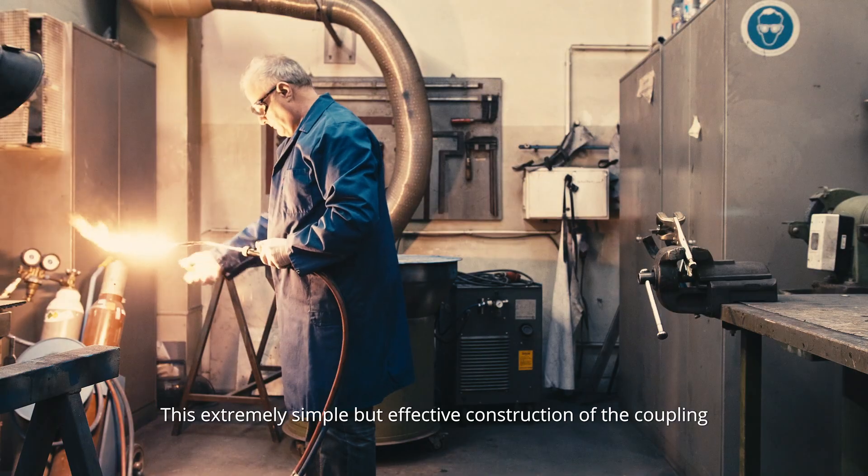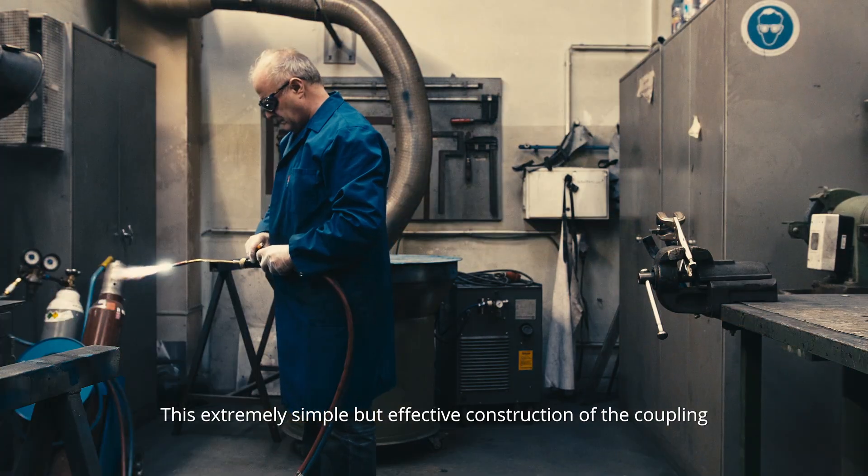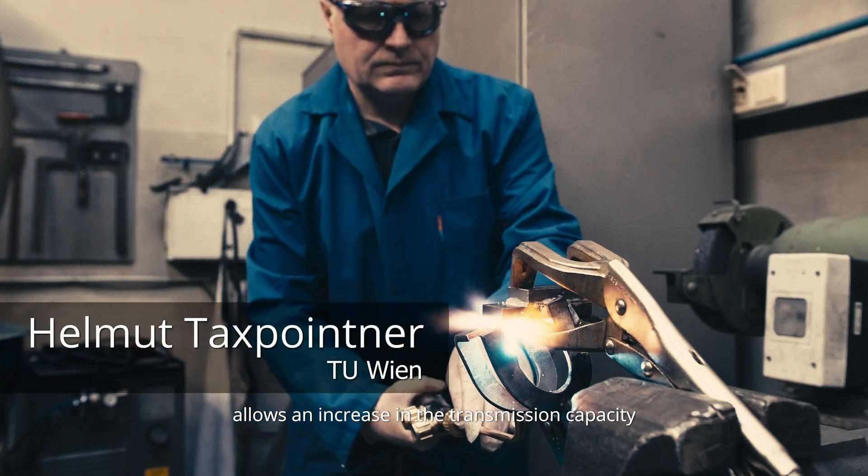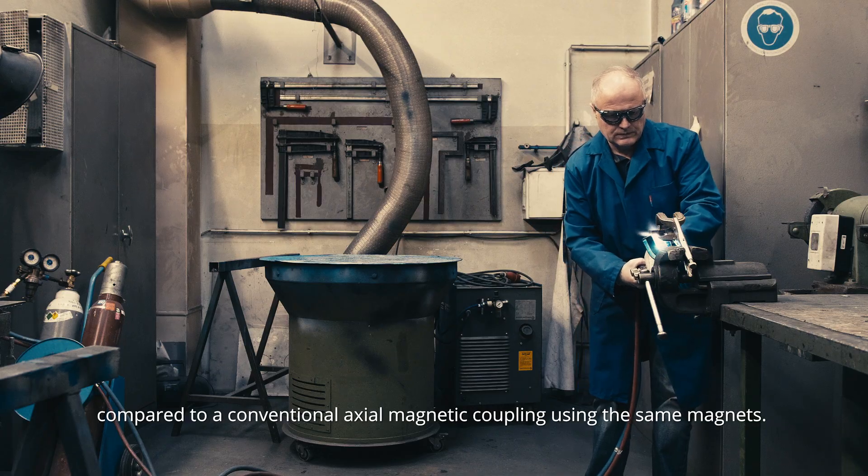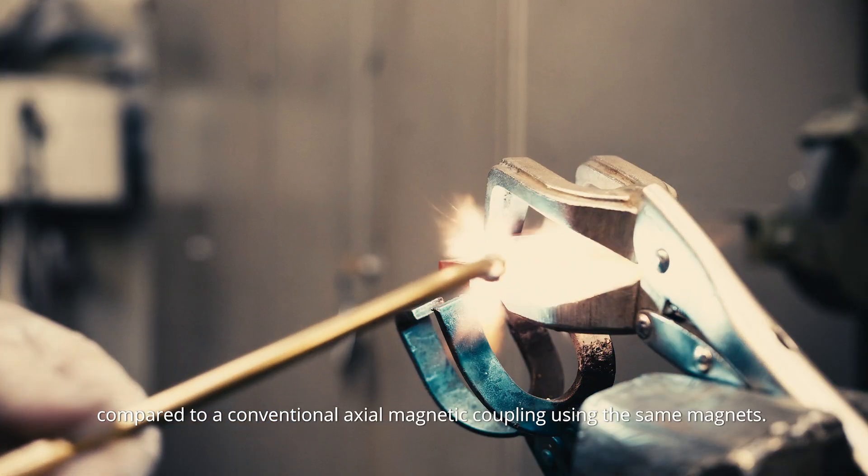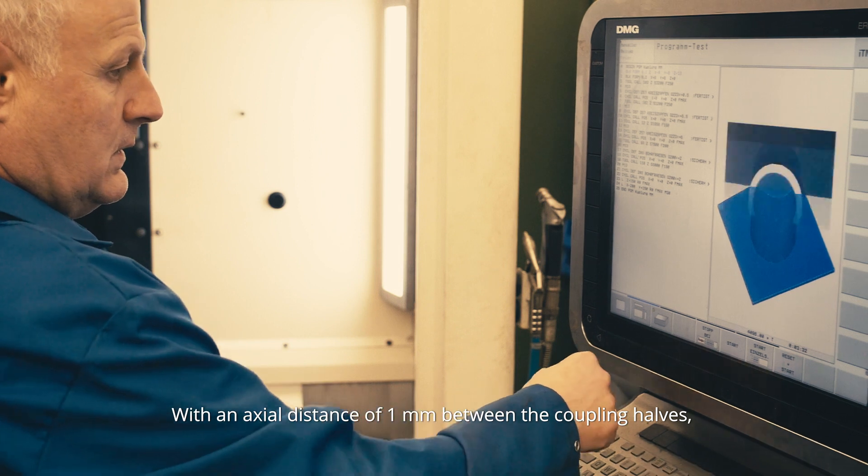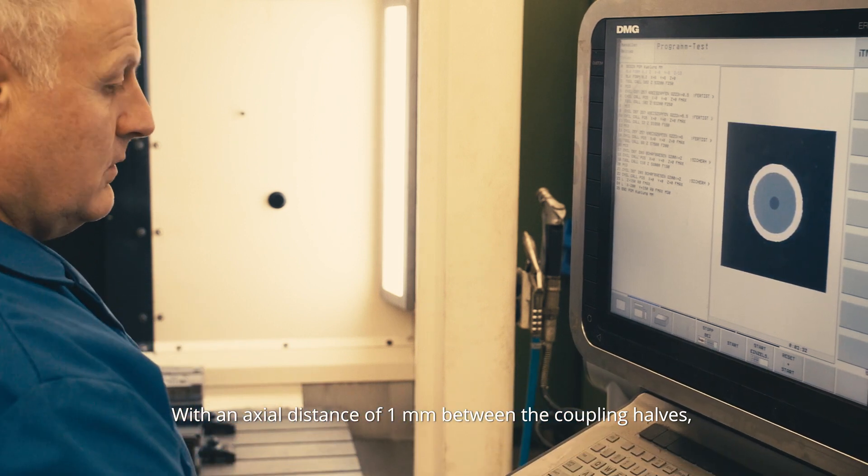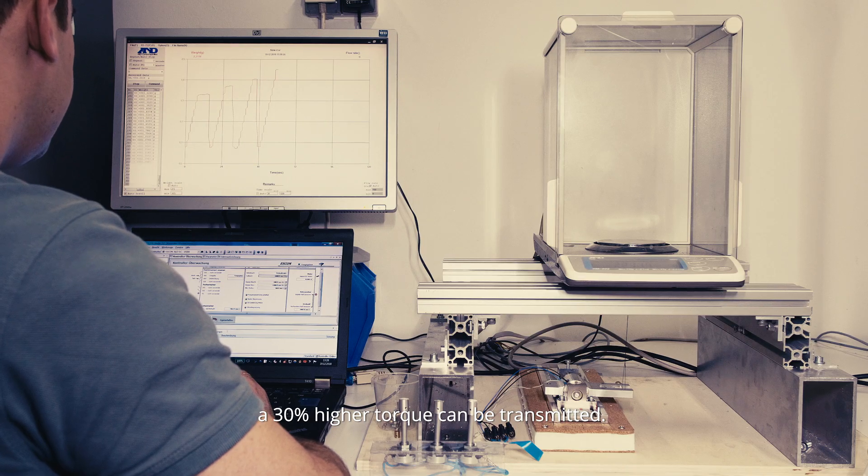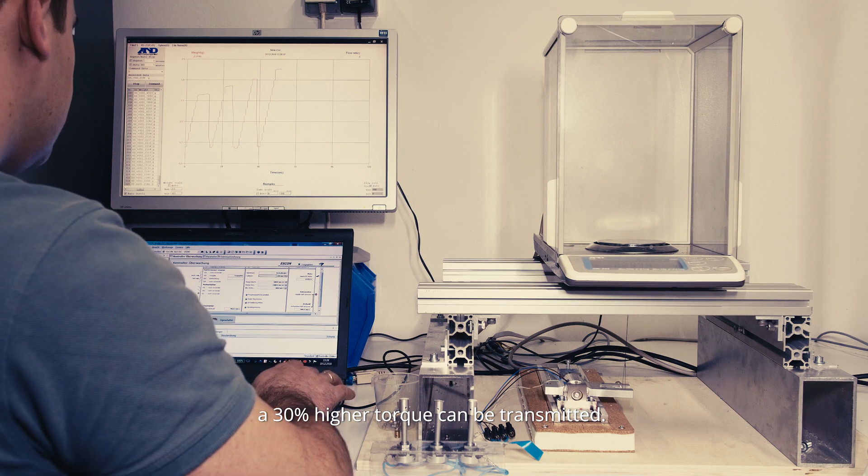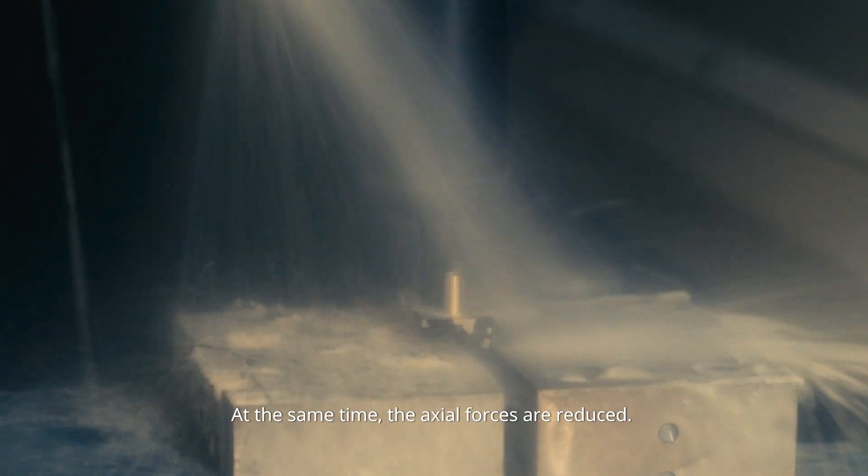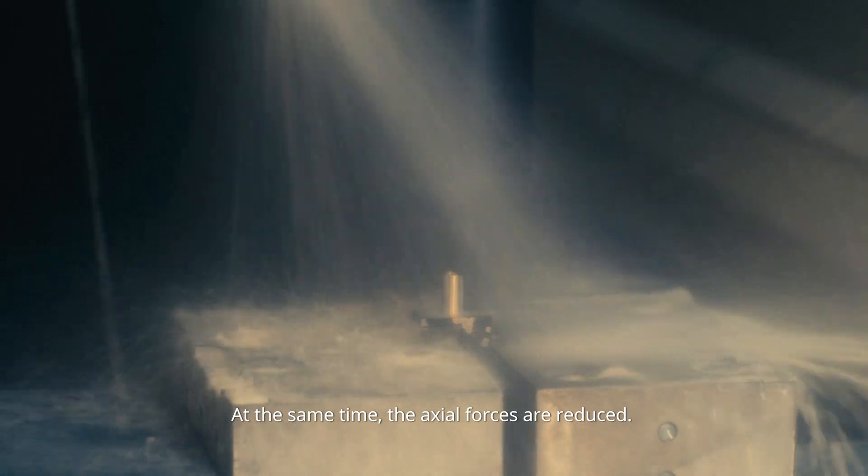This extremely simple but effective construction of the coupling allows an increase in the transmission capacity compared to a conventional axial magnetic coupling using the same magnets. With an axial distance of one millimeter between the coupling halves, a 30% higher torque can be transmitted. At the same time, the axial forces are reduced.